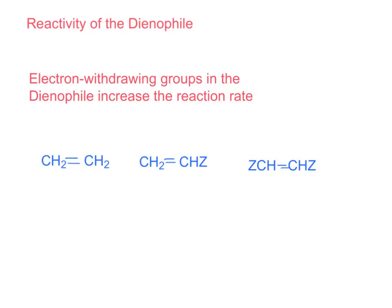An important concept to understand is the reactivity of dienophiles. An electron-withdrawing group will increase the rate of reaction. A simple example would be an aldehyde attached to an alkene, which pulls electron density toward the electron-withdrawing group. Each time you add an additional electron-withdrawing group, the rate of reaction increases. Therefore, the rate of reaction for these three molecules increases as you go to the right.